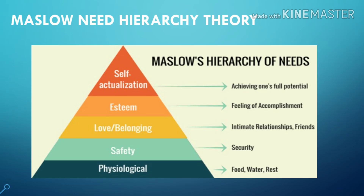Maslow's Need Hierarchy Theory. This theory is proposed by Abraham Maslow and comprises a five-tier model of human needs. From the bottom: physiological needs, which consist of air, water, food, and shelter. Safety needs include security, employment, and health. Social needs include friends and family. Esteem needs include self-esteem, respect, and status. The last one is self-actualization — the desire to become the most that one can be.